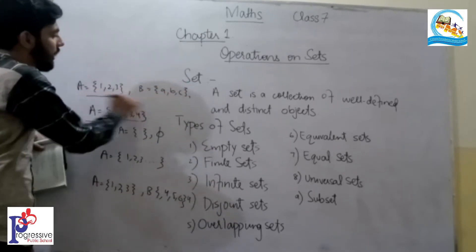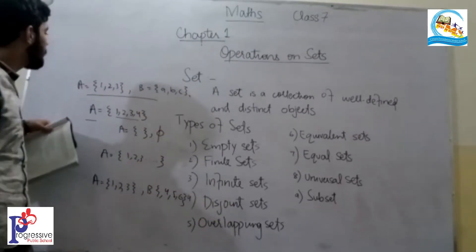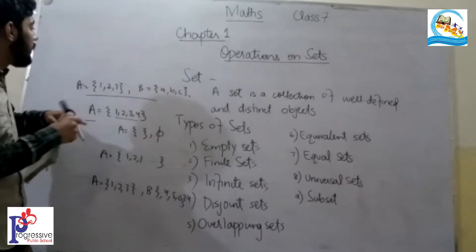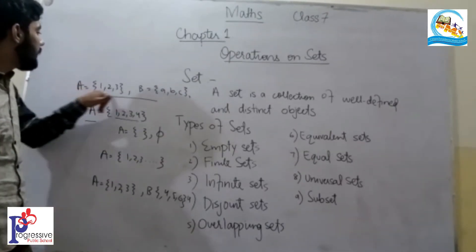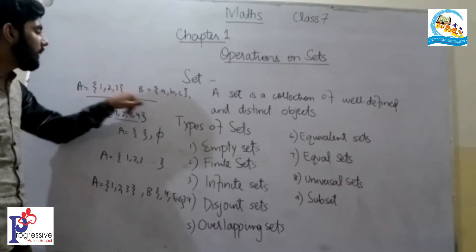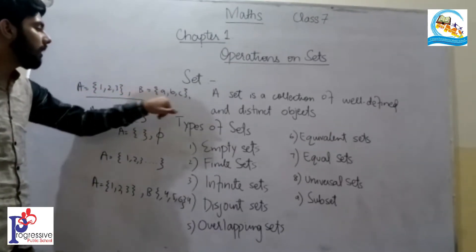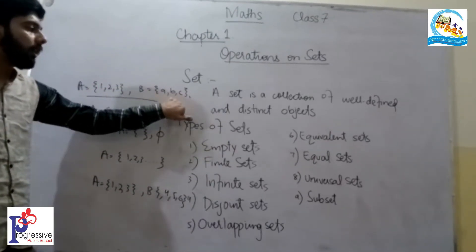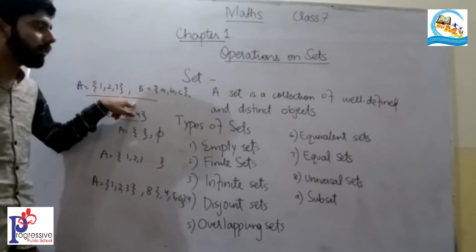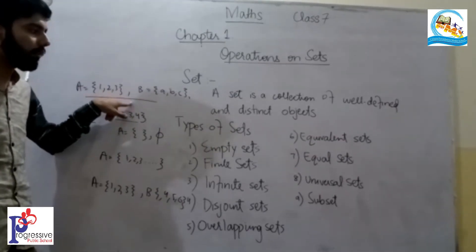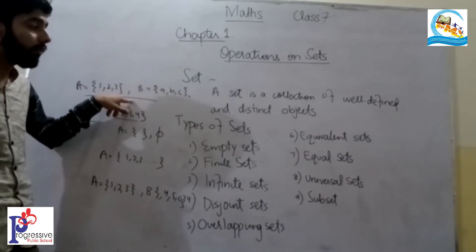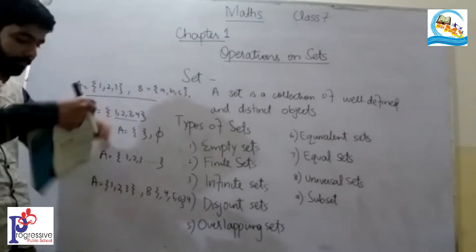These sets are equivalent sets because in A there are three objects and in B there are also three objects. So their number of objects is equal, making them equivalent sets.